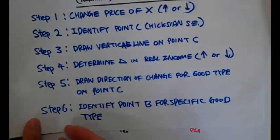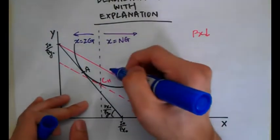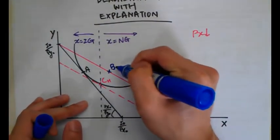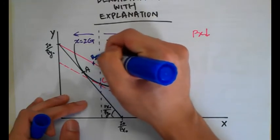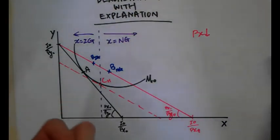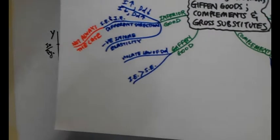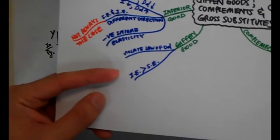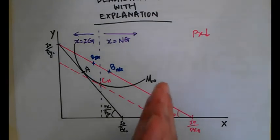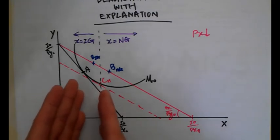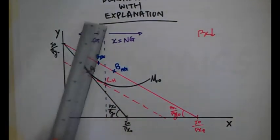Quick recap: we have done everything from step one to step five. Step six is to identify point B for the specific good type. If point B is here, X is a normal good; if point B is here, X is an inferior good. Now, where is the Giffen good? From the mind map, a Giffen good not only violates the law of demand — the income effect for a Giffen good is also larger than the substitution effect. This means a Giffen good is a very inferior good.